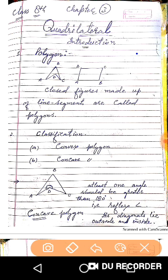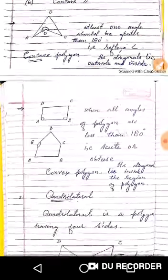So a Concave Polygon is a Polygon wherein at least one angle is greater than 180 degrees, that is a reflex angle. And its diagonals lie both inside and outside the region of the Polygon. This is one type of Polygon.